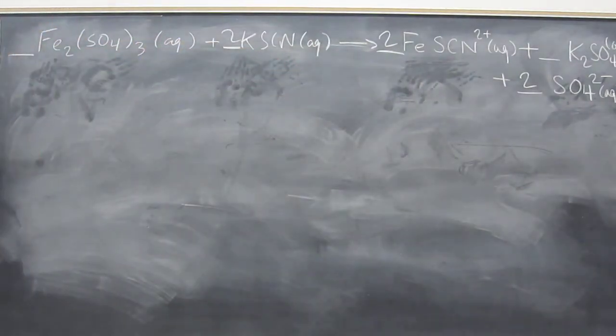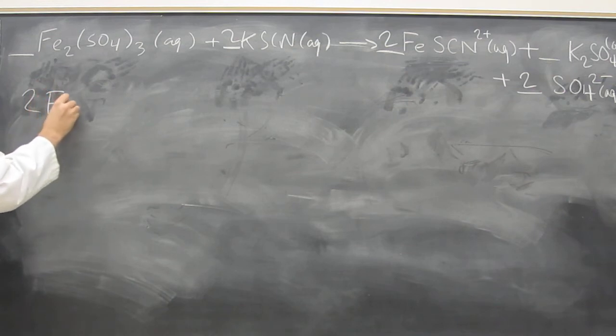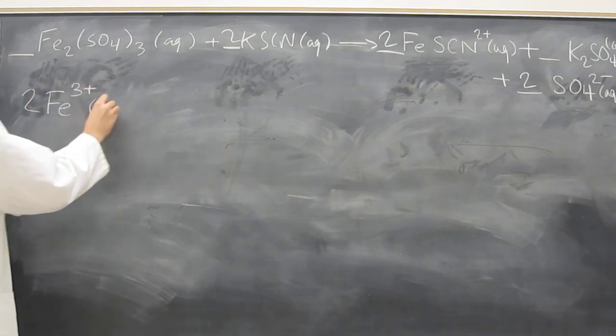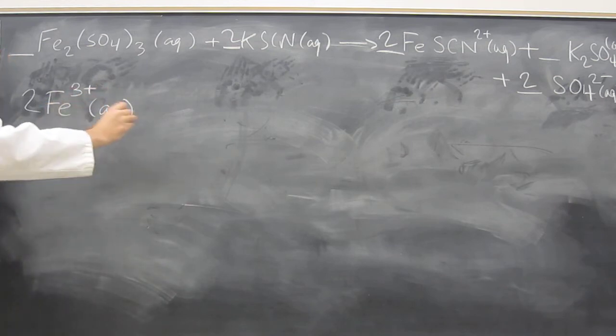This is a more complex problem than you would see on a test in Intro to Chemistry. But let's just put it together, because it's good for you guys to think about. So what would be the total ionic? 2 Fe 3 plus, aqueous. Everybody could have gotten that.